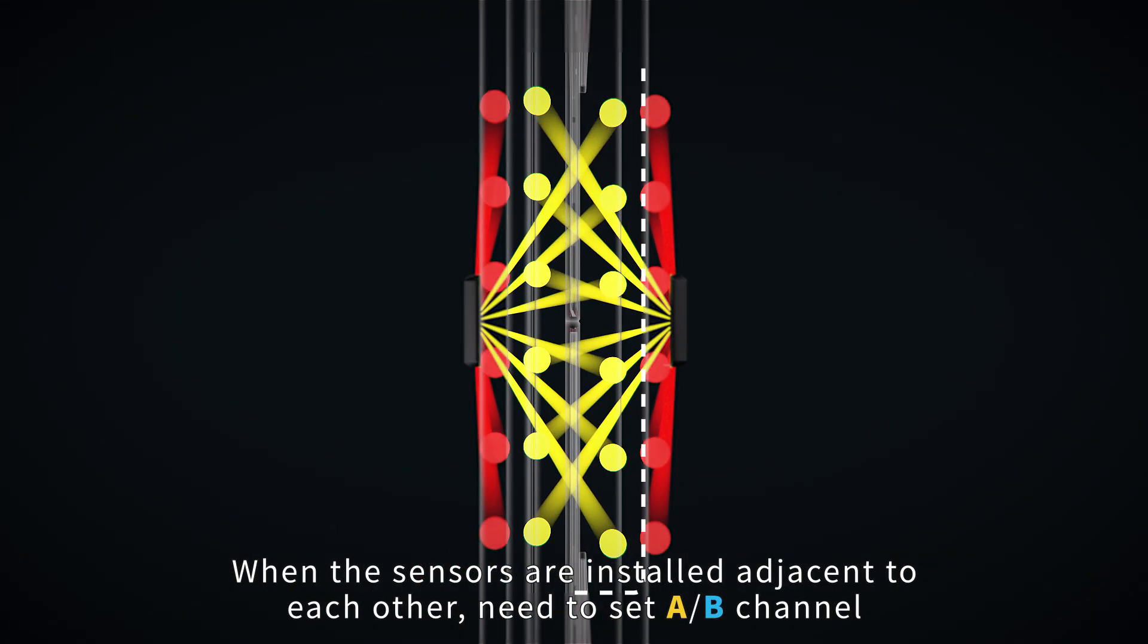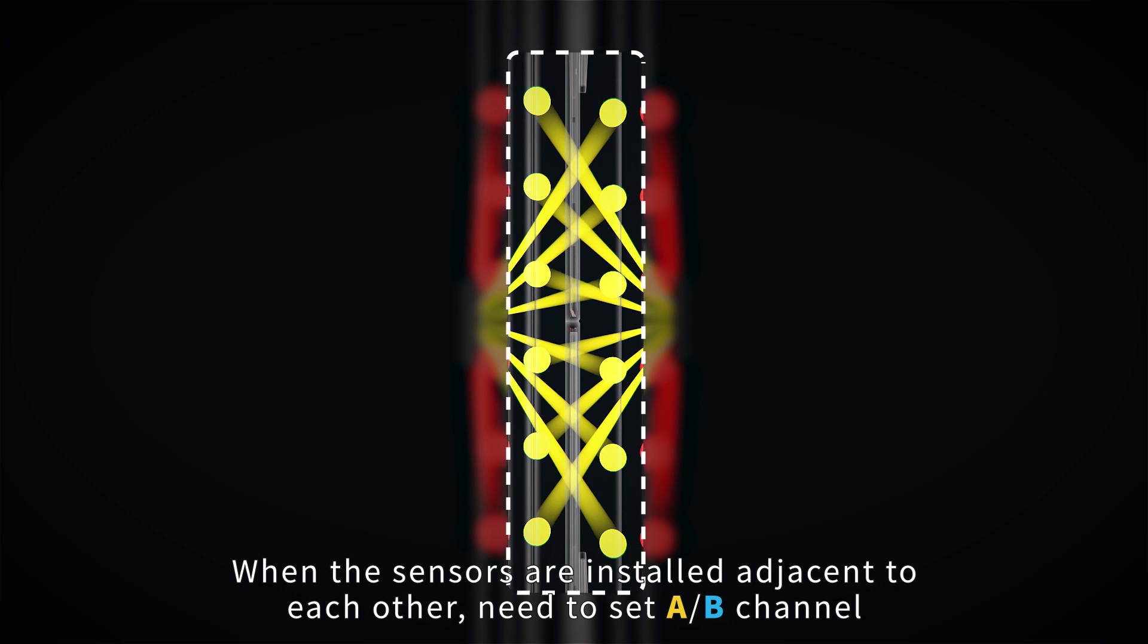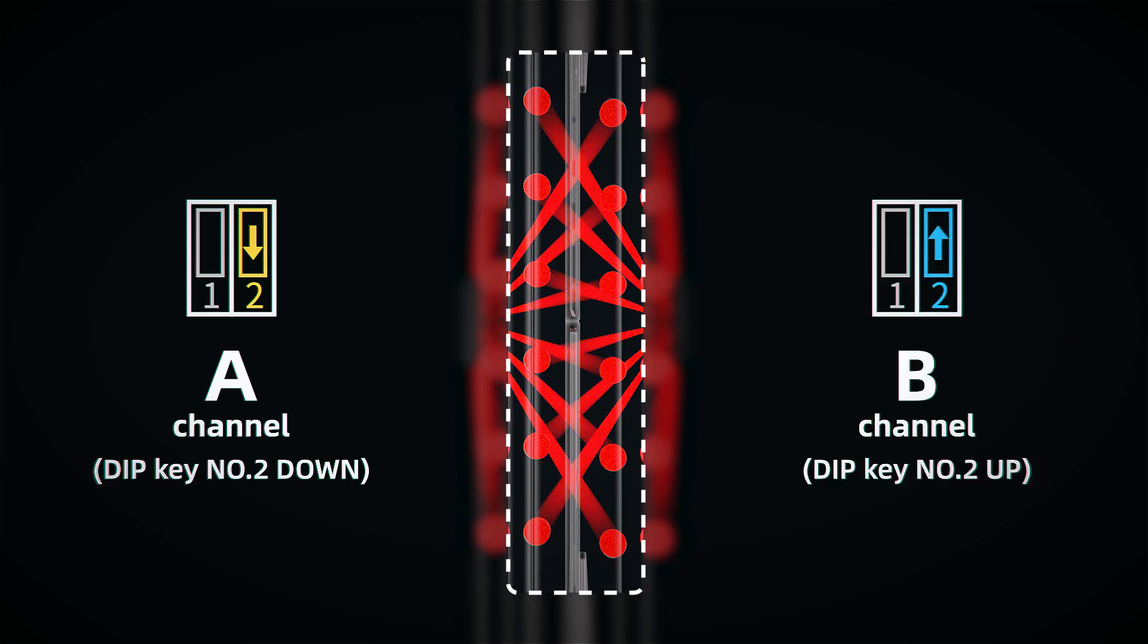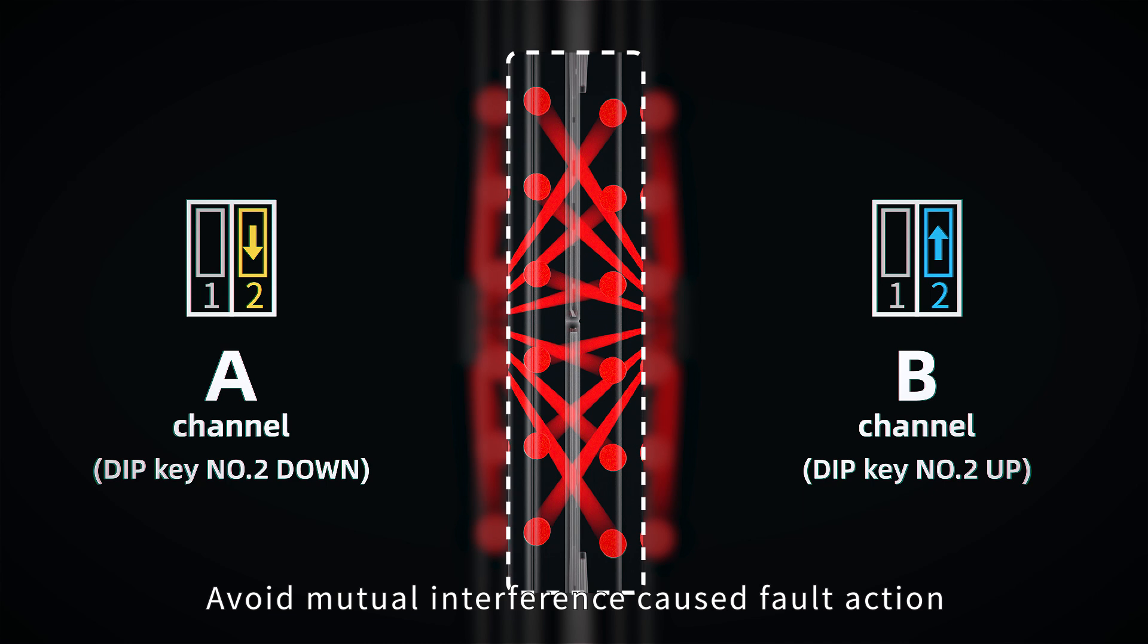When the sensors are installed adjacent to each other, need to set A-B channel. DIP Key No.2 down: A channel. DIP Key No.2 up: B channel. Avoid mutual interference.